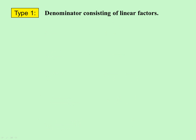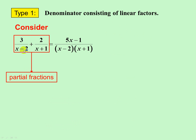Let's now look at type 1: linear factors. Linear factors means producing straight line graphs. So if we had y equals x minus 2, that would be a straight line; y equals x plus 1, straight line. Linear factors have degree 1 and not above.